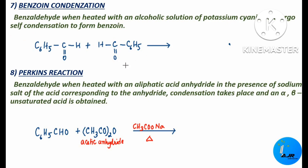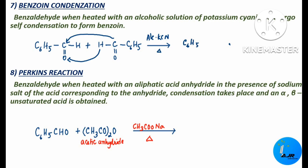Here, this hydrogen gets added up to this oxygen and the rest gets added up to this carbon. The product we get is C6H5–C(OH)H–CHO — that is, C6H5 C OH, and to this carbon we get CH with a C=O.